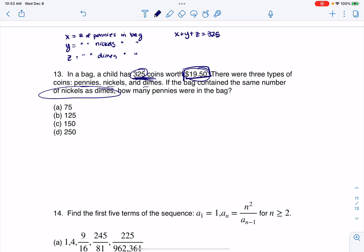If I had 325 coins, then I know X plus Y plus Z has to equal 325, because these are the numbers of each of my coins, right? So between my pennies, nickels, and dimes, I had 325 coins. The next one gives you a monetary value, right? $19.50. So let's start converting our pennies, nickels, and dimes into some money.